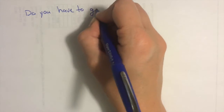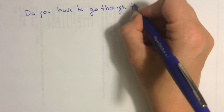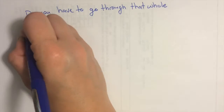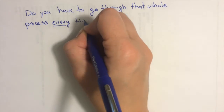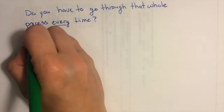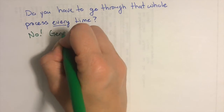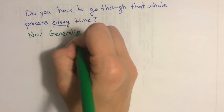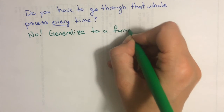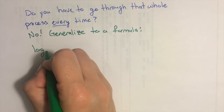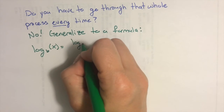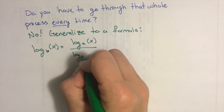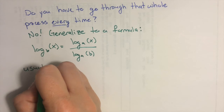Now you may be asking yourself: do I have to go through that whole rigmarole every time I want to evaluate a logarithm that's not obvious? The answer is no. We can generalize this idea to a formula. The formula says log base b of x equals log base a of x over log base a of b.